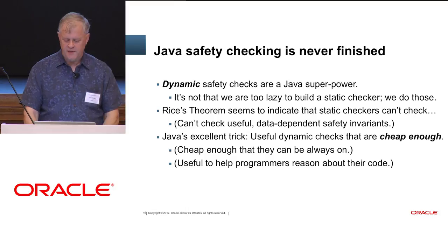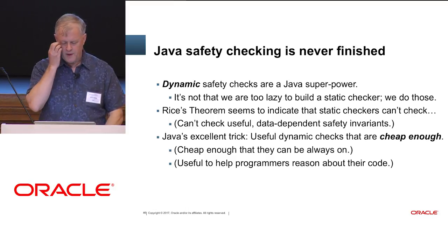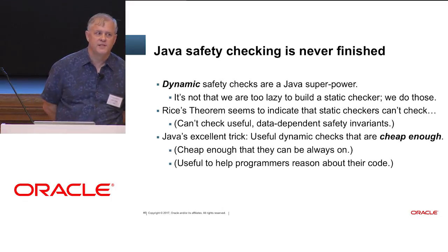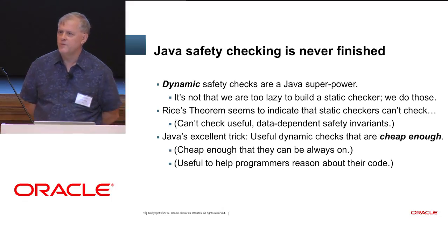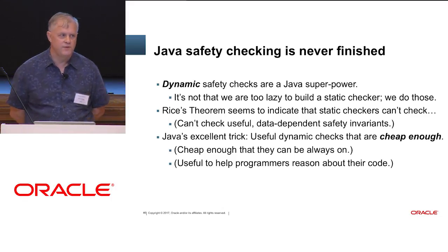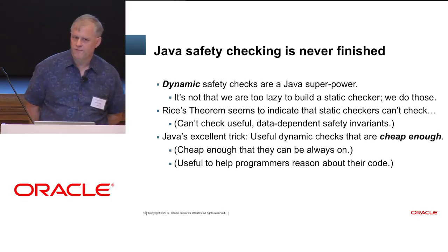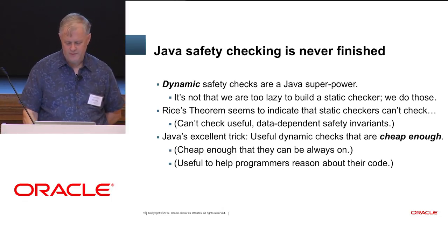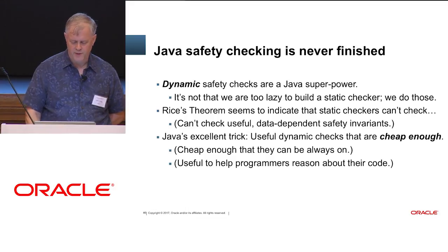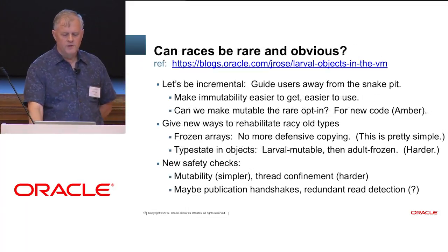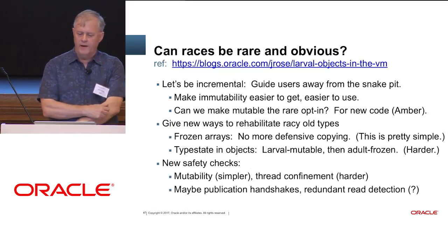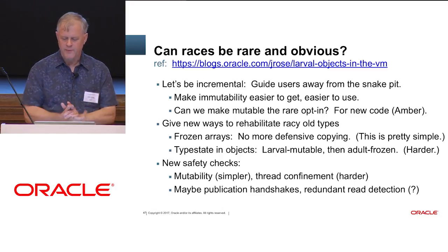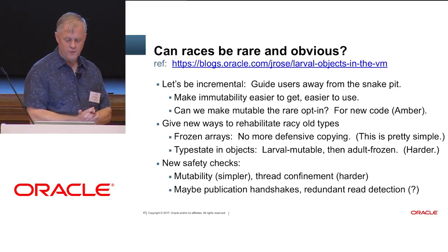Dynamic safety checks are a superpower — this is Java's excellent trick. Putting in dynamic safety checks that are strictly more powerful than anything C++ can do for you, and making them cheap enough — it's one of the big reasons Java is around. So can races be made rare, obvious, and self-diagnosing? Maybe we can do it. Maybe we can get our users away from the snake pit.